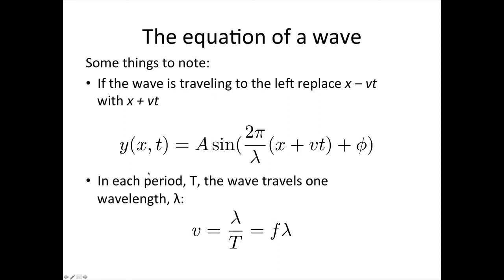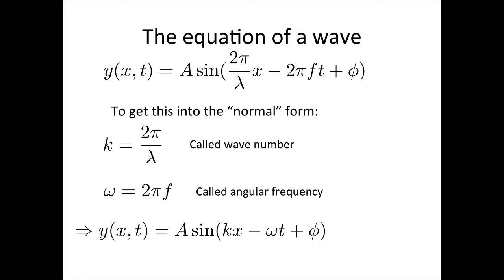We've already learned that in each period the wave travels one wavelength. So the velocity of the wave is given by the wavelength divided by the period, and the inverse of the period is the frequency. So we've got v equals f times lambda, which we'll now use to replace the v in our wave equation with f lambda to simplify it. Replacing v with f lambda, we've now got a sine of 2π over lambda, which is hopefully familiar to you — that's called the wave number. Now you know why the wave number is important. This equation becomes 2π over lambda times x minus 2π ft plus phi.